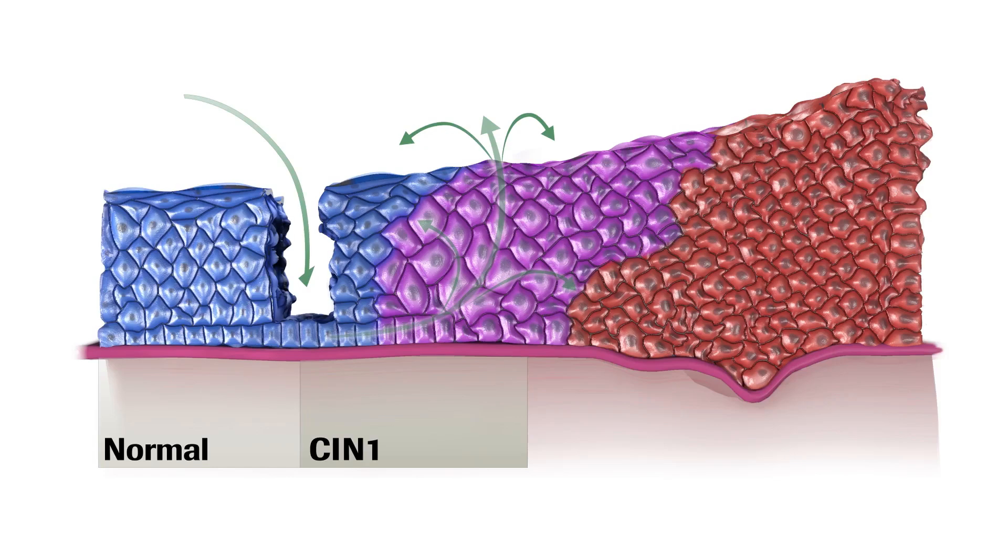When this extends up two-thirds of the way from the bottom basal epithelium, it is CIN2. Ultimately, when the abnormally dividing cells span more than two-thirds of this cell layer, it is referred to as CIN3.